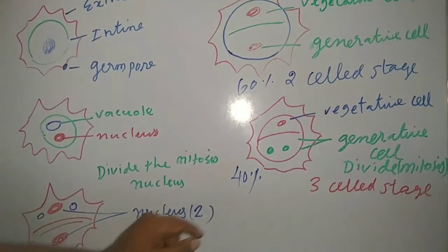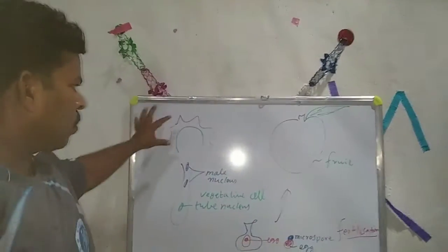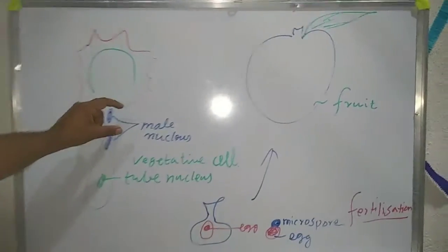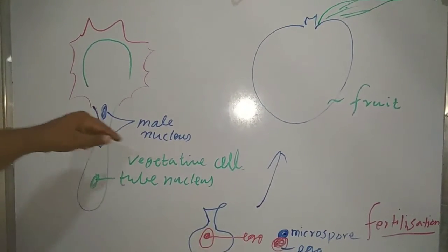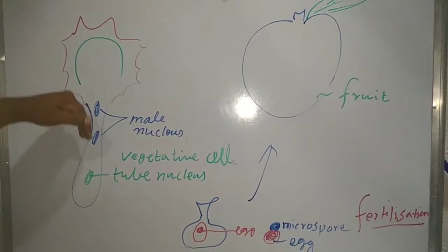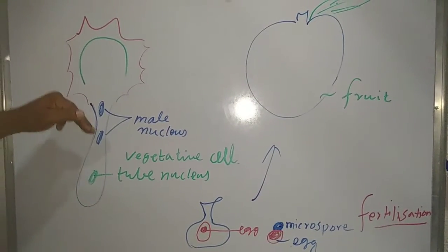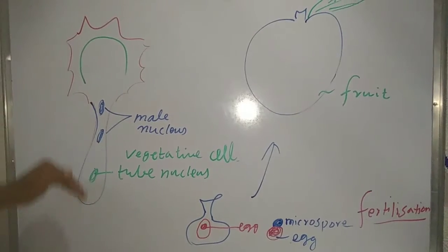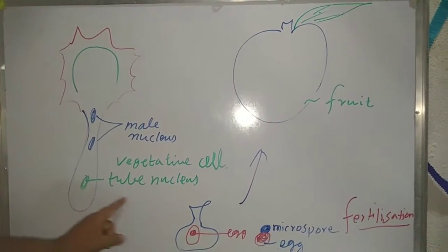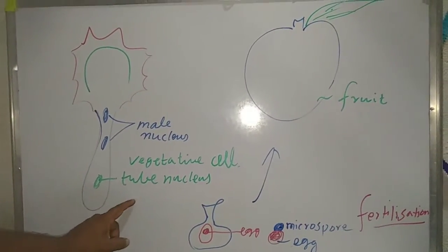After that, the microspore, the male nucleus. The generative cell forms two male nuclei. The vegetative cell forms the tube nucleus. What is the function of the tube nucleus? The tube nucleus controls the pollen tube. How many lengths of the pollen tube will develop - that is controlled by the tube nucleus. One more question.